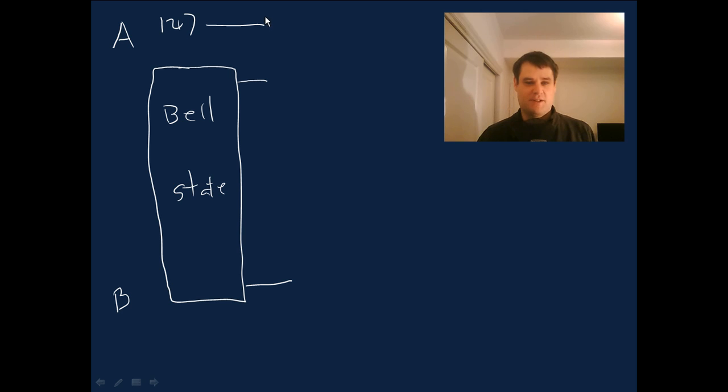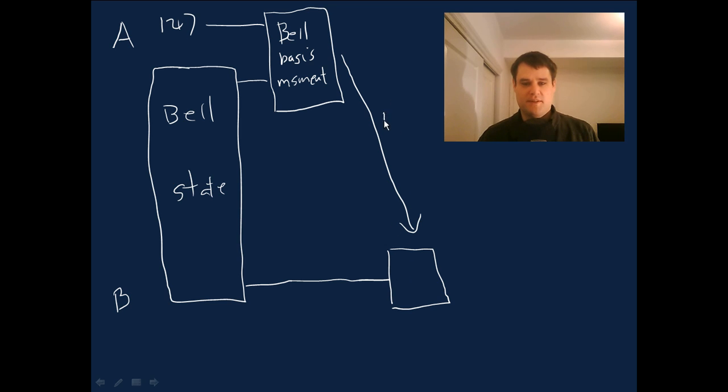This has been prepared, it doesn't really matter what procedure has been used. And what Alice does to teleport her state over to Bob is she does a bell basis measurement. And that gives one of four measurement outcomes corresponding to the four bell basis elements. And so she transfers her measurement outcome over to Bob, so this is classical information that is being sent. And she transfers it over to Bob, who does a recovery operation, which depends on what the measurement result is.